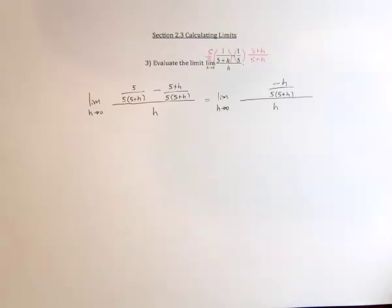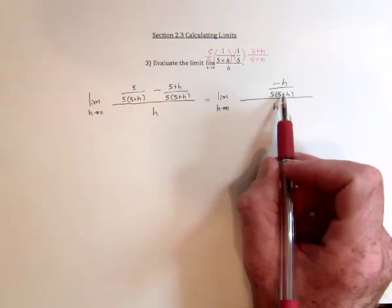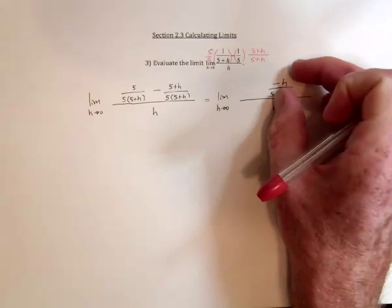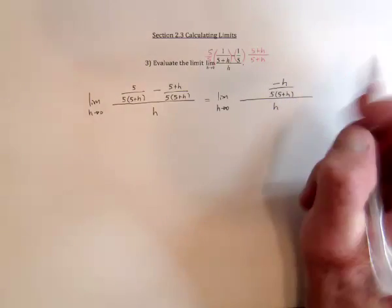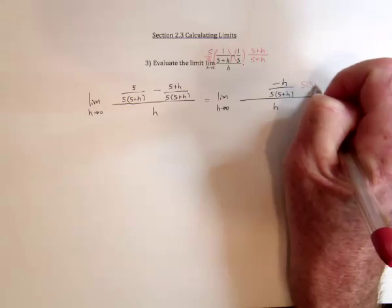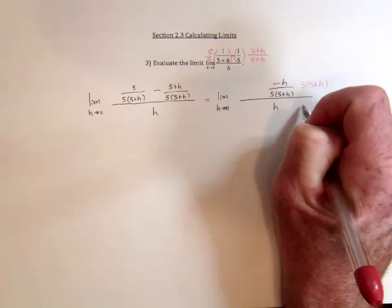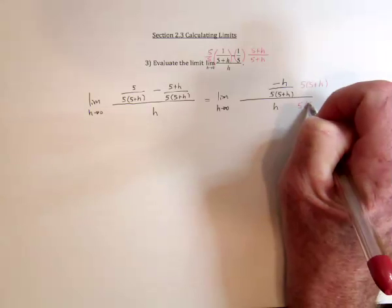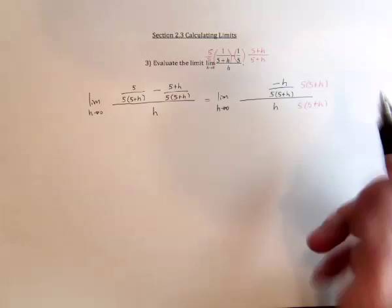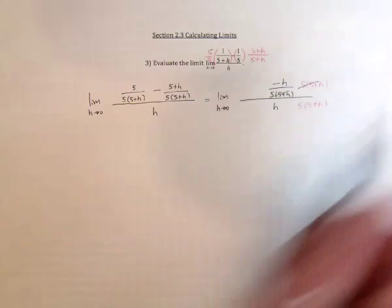And now we've got what's called a compound or complex fraction. So whatever this denominator is, multiply. So you look at it as the top and the bottom. And for the top one, the denominator is 5 times (5 plus h). So multiply this whole big fraction on the top and the bottom by the 5 times (5 plus h). So these are going to cancel, leaving only negative h in the numerator.